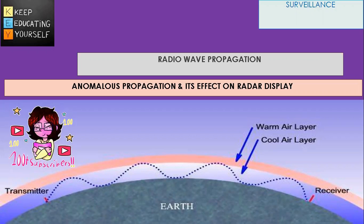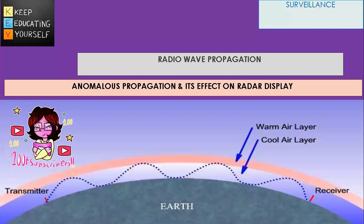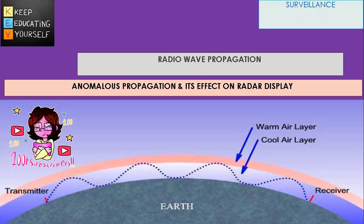It is possible for a layer of warm air to occur above a layer of cool air in the atmosphere, which is contrary to the normal temperature gradient. This is called temperature inversion. The resultant change in the index of refraction may cause signals to follow the curvature of the earth. This phenomenon is called superrefraction or anomalous propagation, and the signals travel in apparent ducts for tremendous distances, far beyond the radar horizon.